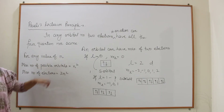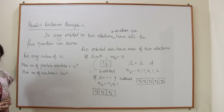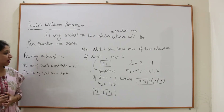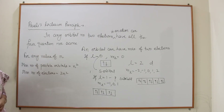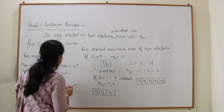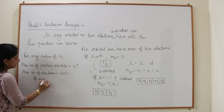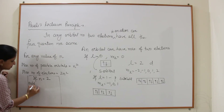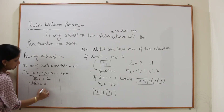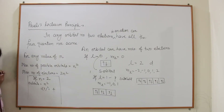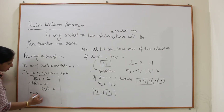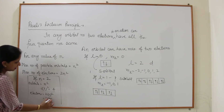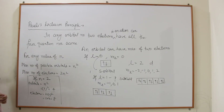For example, if n=2: maximum orbitals = n² = 2² = 4, and maximum electrons = 2 × 4 = 8.